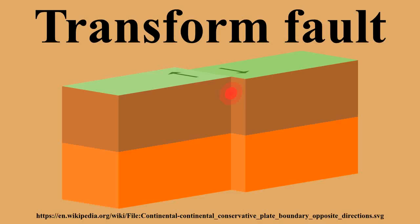Transform faults are commonly found linking segments of mid-oceanic ridges or spreading centers. These mid-oceanic ridges are where new seafloor is constantly created through the upwelling of new basaltic magma. With new seafloor being pushed and pulled out, the older seafloor slowly slides away from the mid-oceanic ridges toward the continents. This separation between segments of the ridges causes portions of the seafloor to push past each other in opposing directions, where transform faults are currently active.